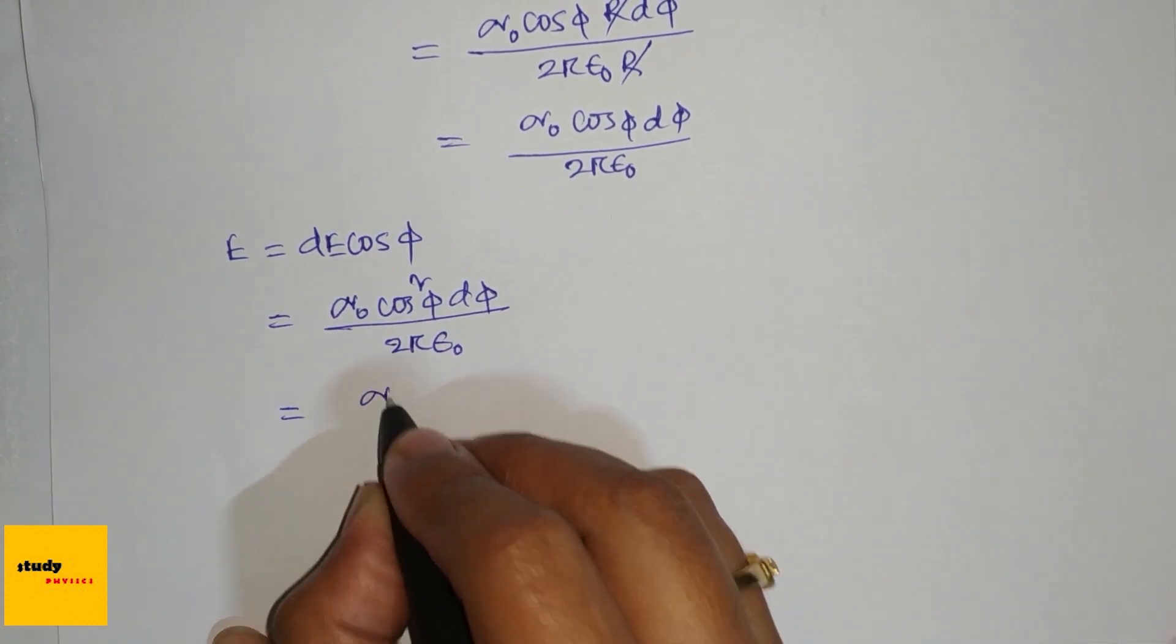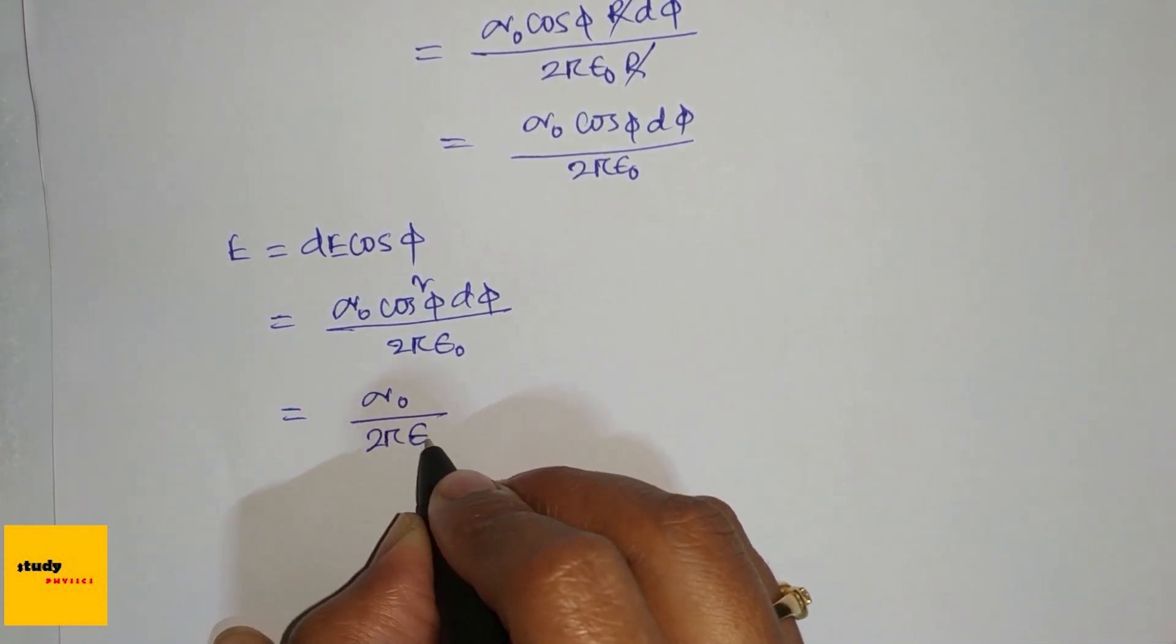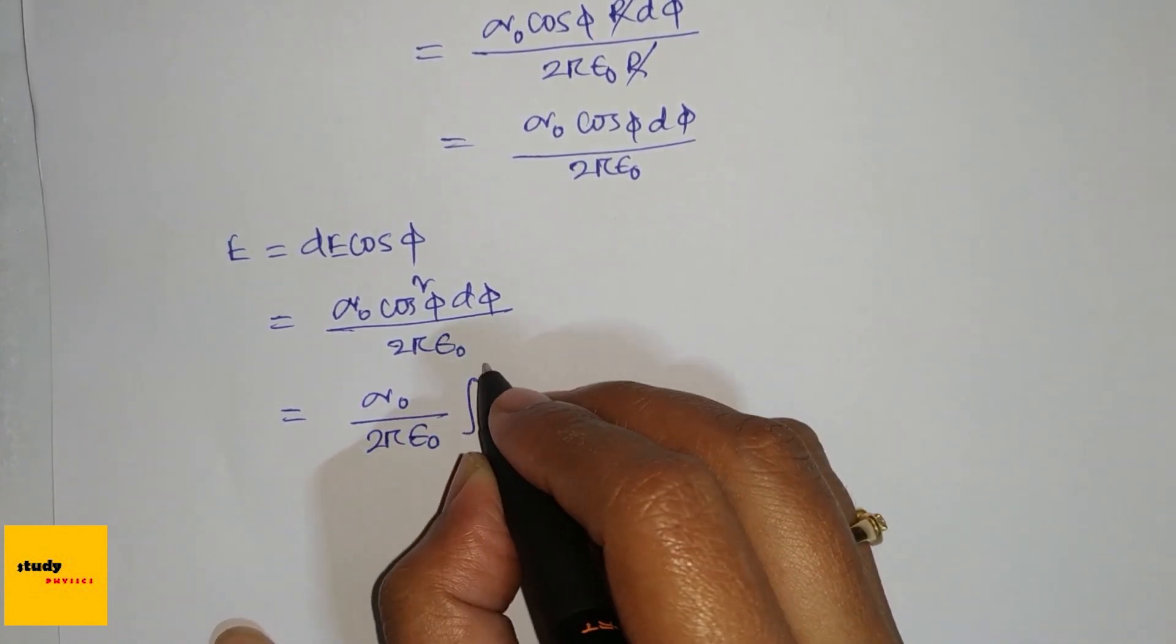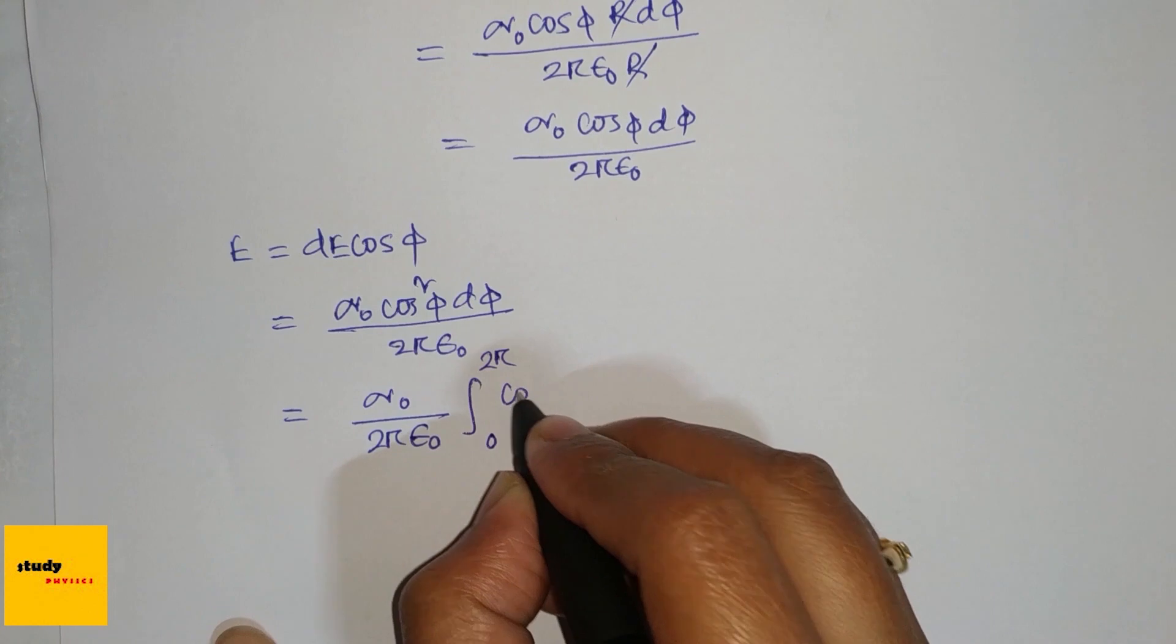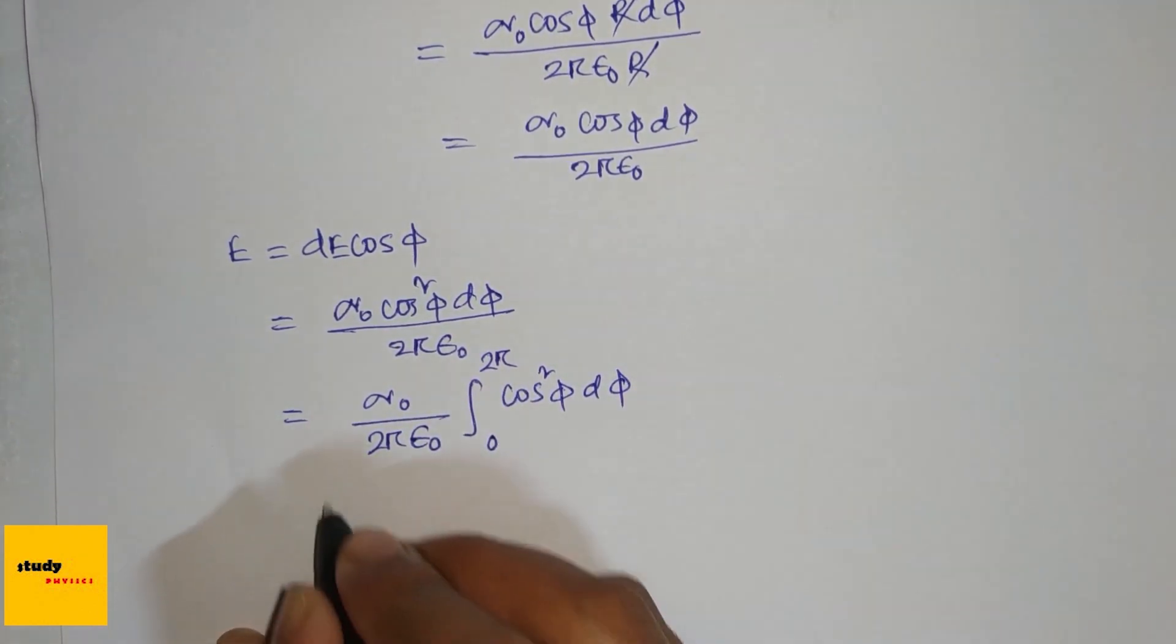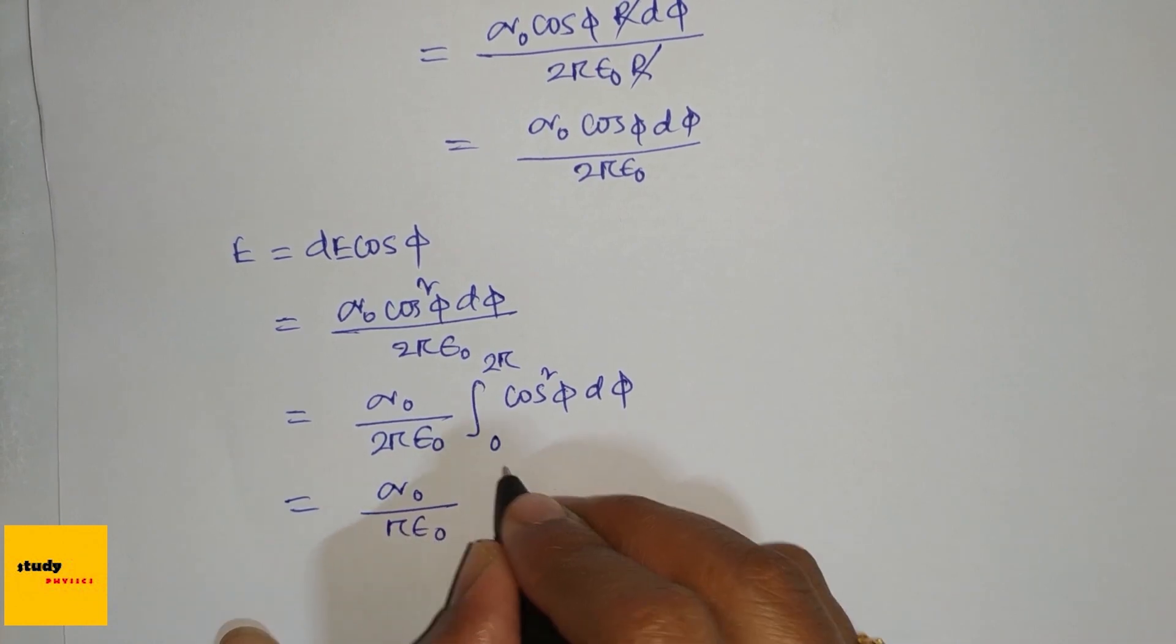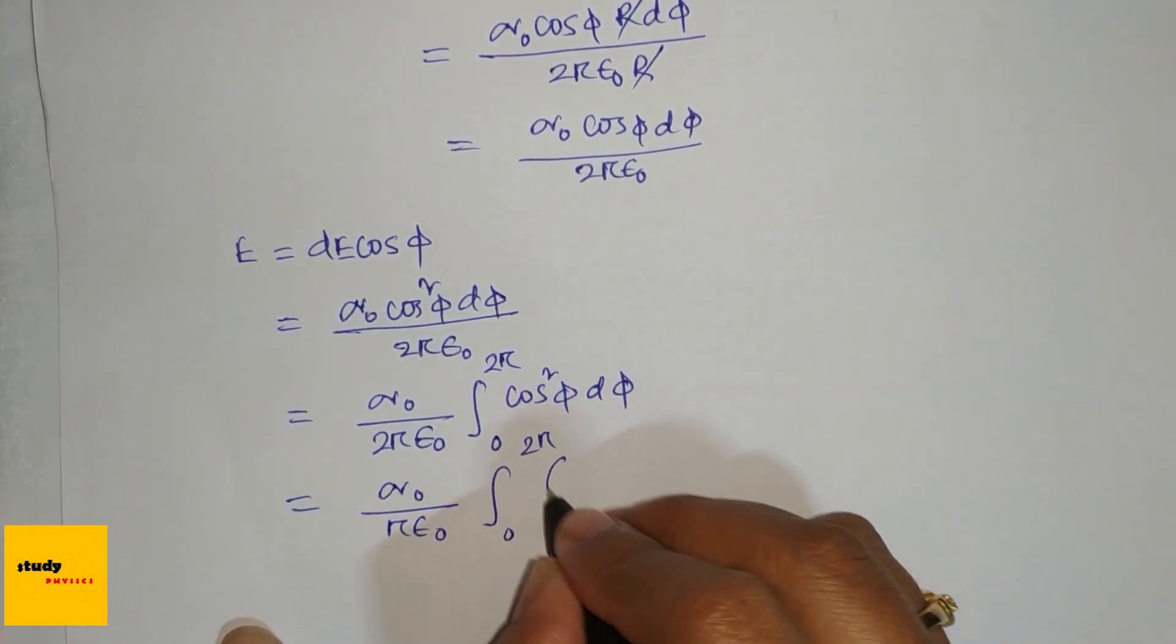So E equals the integral from 0 to 2π of sigma_0 divided by 2π epsilon_0, cos(phi) d(phi). This gives us sigma_0 divided by 4π epsilon_0, integral from 0 to 2π.